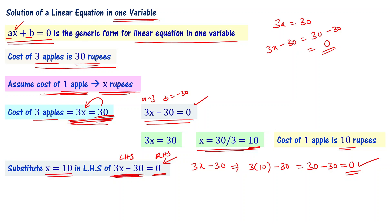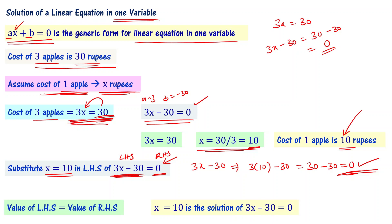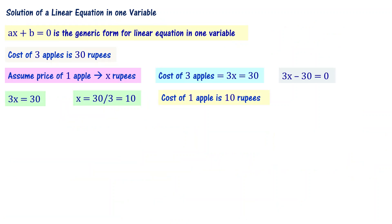The value of LHS is 0 and the value of RHS is also 0, so LHS equals RHS. We say that the given value of x is the solution to the equation. We can say that x equal to 10 is the solution of 3x minus 30 equal to 0. In general, if you substitute an x value and the LHS value equals the RHS value, then that value of x is the solution to the given equation.